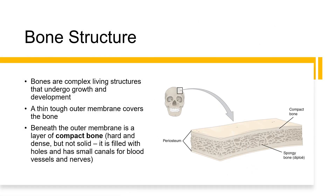The first layer is the periosteum, which is a tough, fibrous membrane that covers the surface of the bones. The periosteum contains blood vessels, nerves, and cells that are involved in bone growth and repair. It is essential for the nourishment and protection of bones. Beneath the periosteum lies the compact bone, which is a dense and strong layer that gives bones their hardness and strength. Compact bone is made of osteons, which are cylindrical structures containing layers of mineralized bone tissue that provide strength and stability.